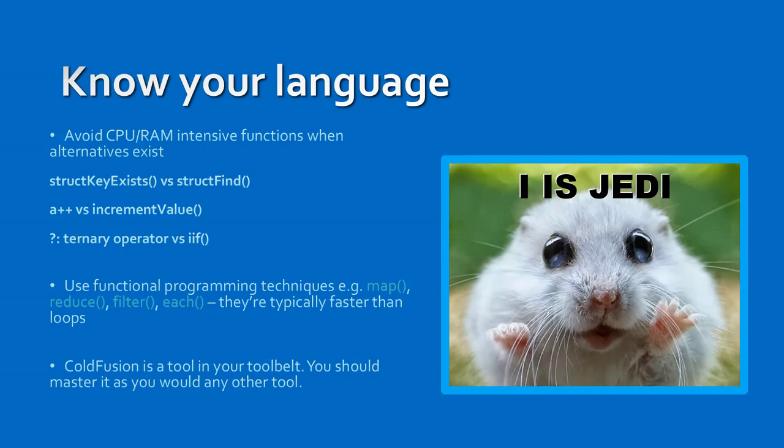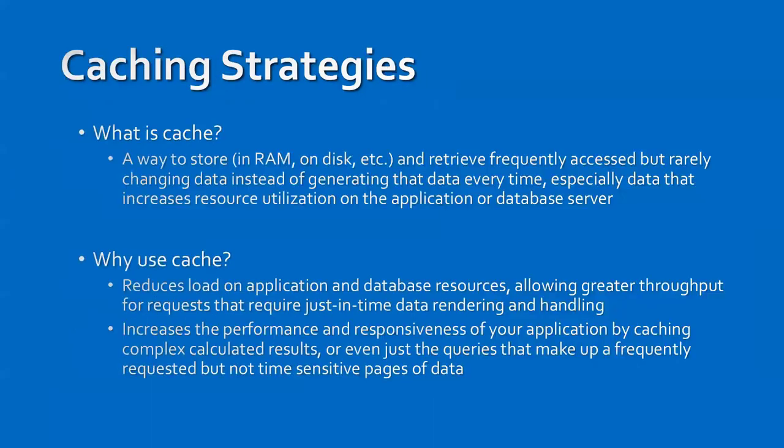If you want to know whether a loop or a functional approach is faster, check the milliseconds each takes to execute and choose the faster one. ColdFusion is a tool in your toolbelt among many others, but you should master it as you would any other tool. If you were a car mechanic, you'd master wrenches and sockets. As a software engineer, you should master your language as much as possible.